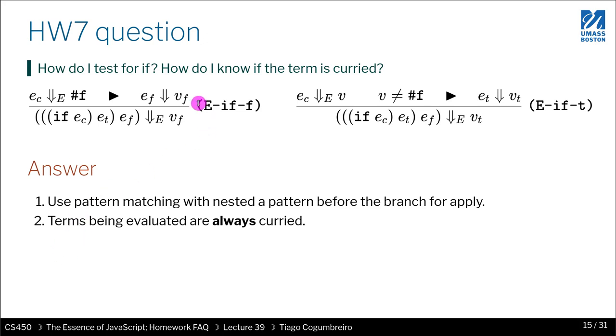The second question is how do I know if the term is curried? For the sake of the interpreter, the input is always curried terms. That is to say all functions only have one argument. You don't have to test that in any way. You can safely assume that all programs given to be executed only have one parameter. They cannot have zero or more than one.